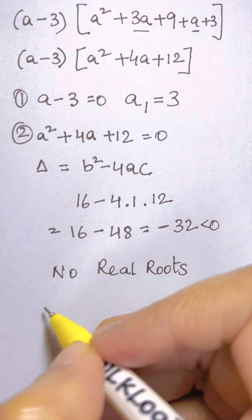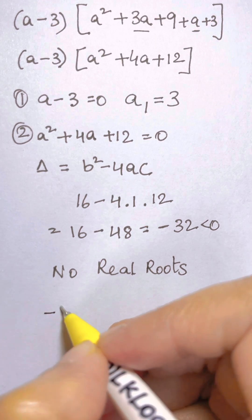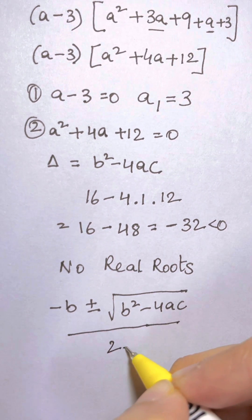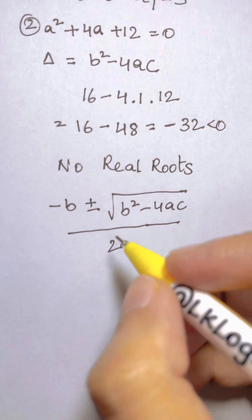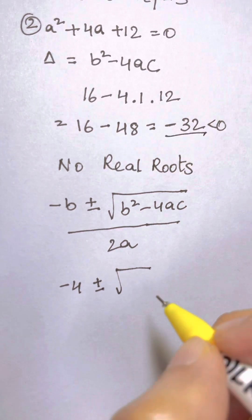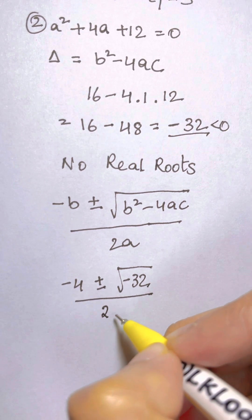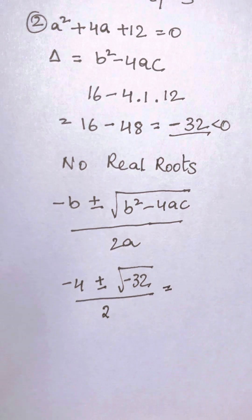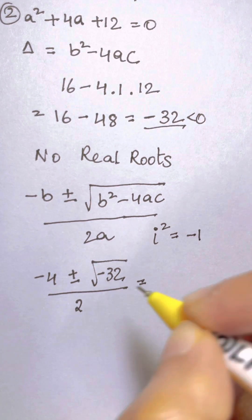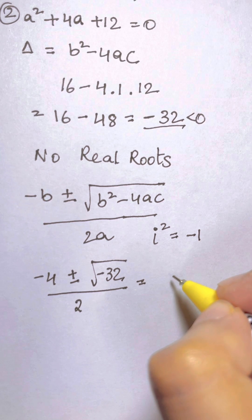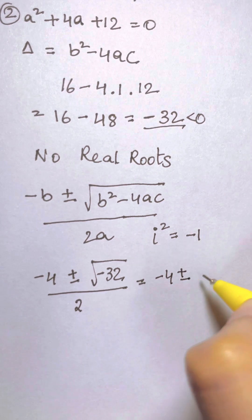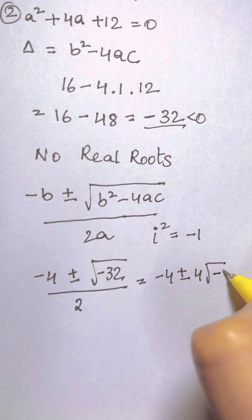So only complex roots. Let's find out what are the complex roots. So we can use quadratic formula. That is -b ± √(b² - 4ac) over 2a. So what is our b? Negative b. So we have -4 ± √(-32) over 2. Now let's solve it further. As you know, i² = -1. So I'm going to write that √32 i. Now √32 is simply 4√2. I'm going to write that -4 ± 4√2 i over 2.